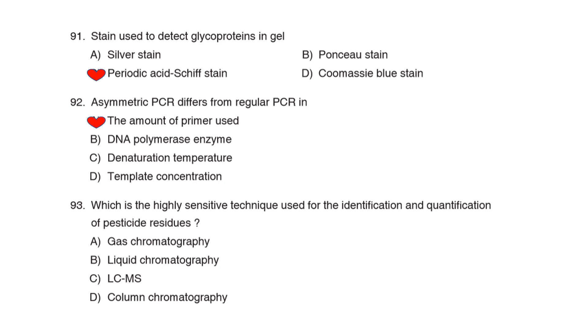92nd Question continued: Asymmetric PCR differs from regular PCR in Correct Answer: Option A: The amount of the primers used. 93rd Question: Which of these highly sensitive techniques is used for the identification and quantification of pesticide residues? Correct Answer: Option C: LC-MS.